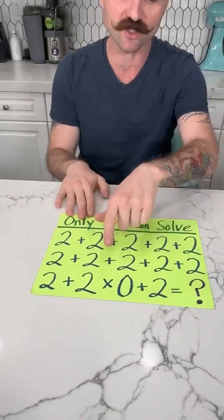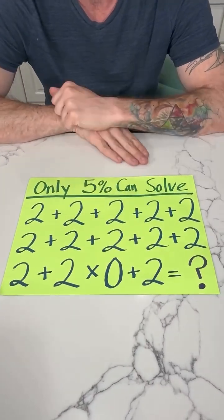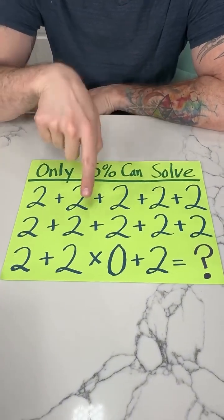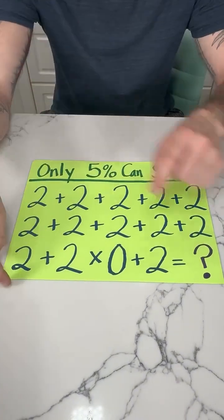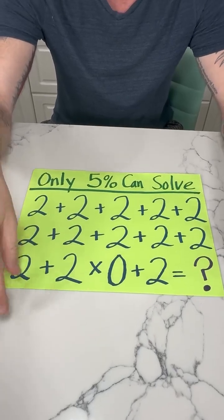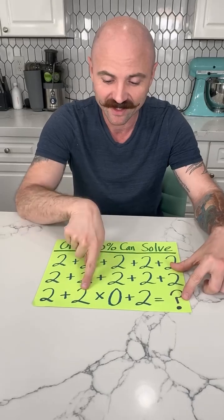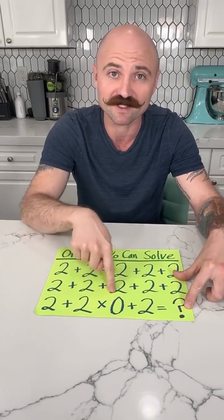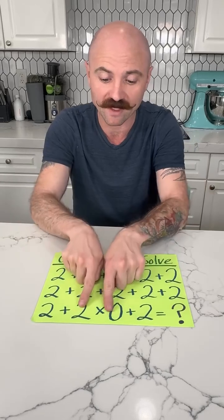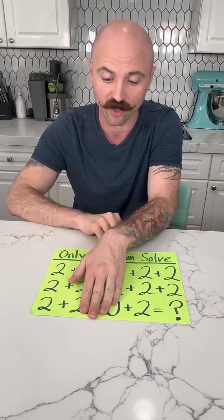So what you have to do, like how our generation learned math, you have to do order of operations. Which, if you remember, was parentheses, exponents, multiplication and division, addition and subtraction, right? Yeah. So you have to do 2 times 0 first. That means automatically you can ignore those two numbers, because this is just 0, right?